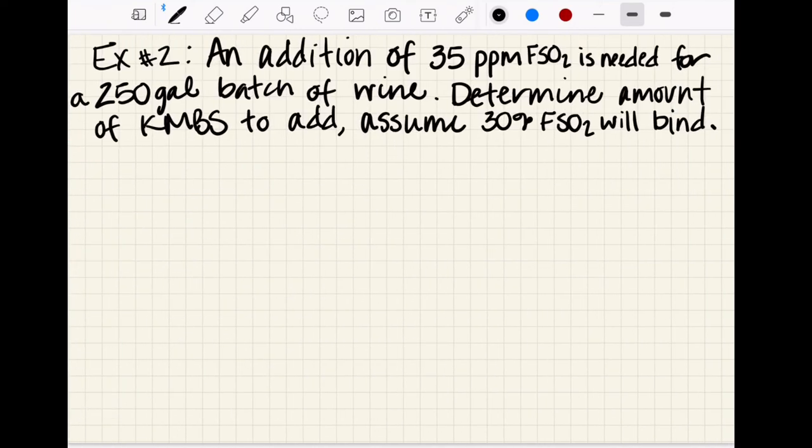I've got one more quick example. In this example, the target minus the current has already been taken care of, so we know that a 35 ppm addition of free SO2 is needed for a 250 gallon batch of wine. We're going to determine the amount of KMBS to add and we're going to assume that 30 percent is going to bind.